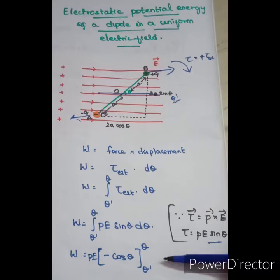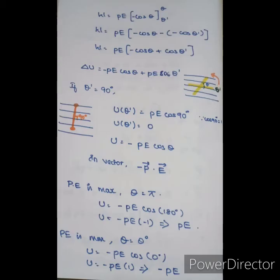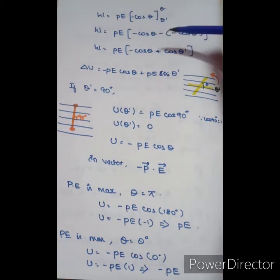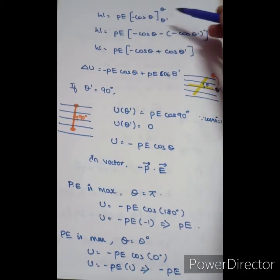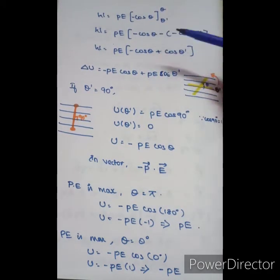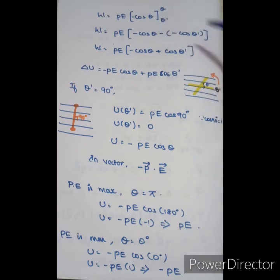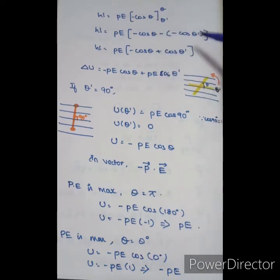Since PE is constant, we can take it outside the integral. The integral of sin theta is minus cos theta. So work done W equals PE times minus cos theta, evaluated from theta-dash to theta. Applying the limits — upper limit minus lower limit — W equals PE times (minus cos theta minus (minus cos theta-dash)), which gives W equals PE times (minus cos theta plus cos theta-dash).